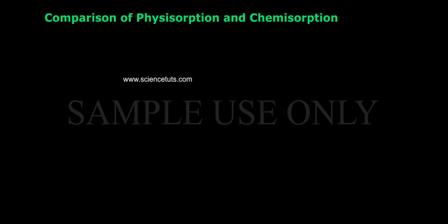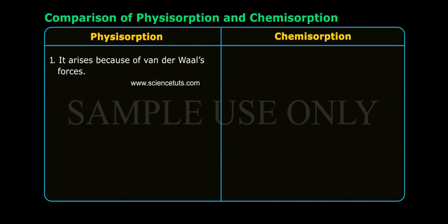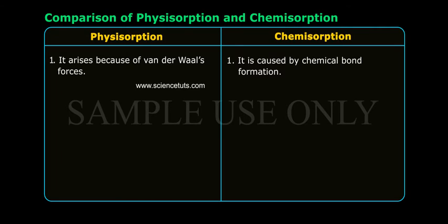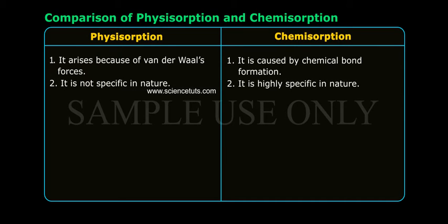Comparison of physisorption and chemisorption. Physisorption vs. Chemisorption: 1. Physisorption arises because of van der Waals forces. Chemisorption is caused by chemical bond formation. 2. Physisorption is not specific in nature. Chemisorption is highly specific in nature.